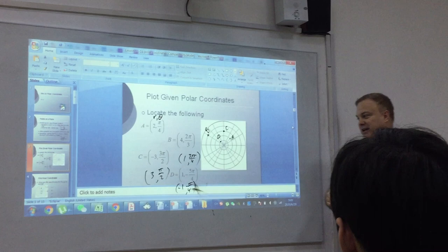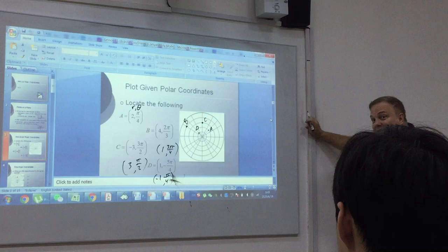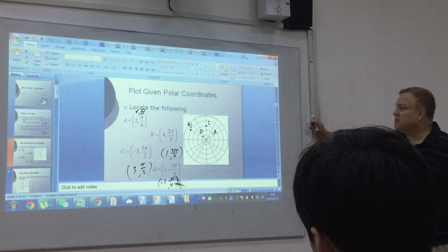So, notice in this case, point D was written with a negative R and a negative beta. What if I want a negative R but a positive beta? Is that possible?